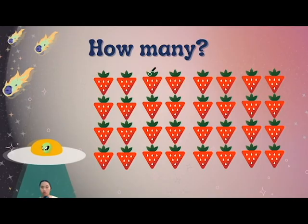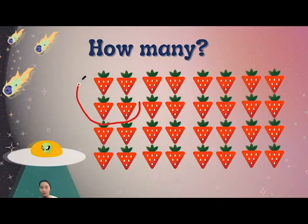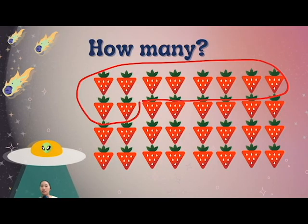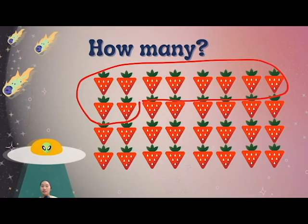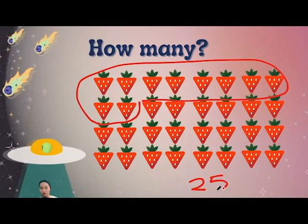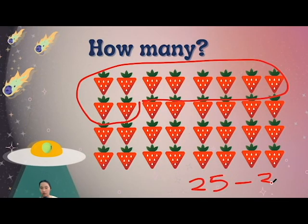Moving on to strawberries. 1, 2, 3, 4, 5, 6, 7, 8, 9, 10. This much is 10. Let's try to make a guess. How many strawberries do we have here? I'm going to say this is around 25 to 30.